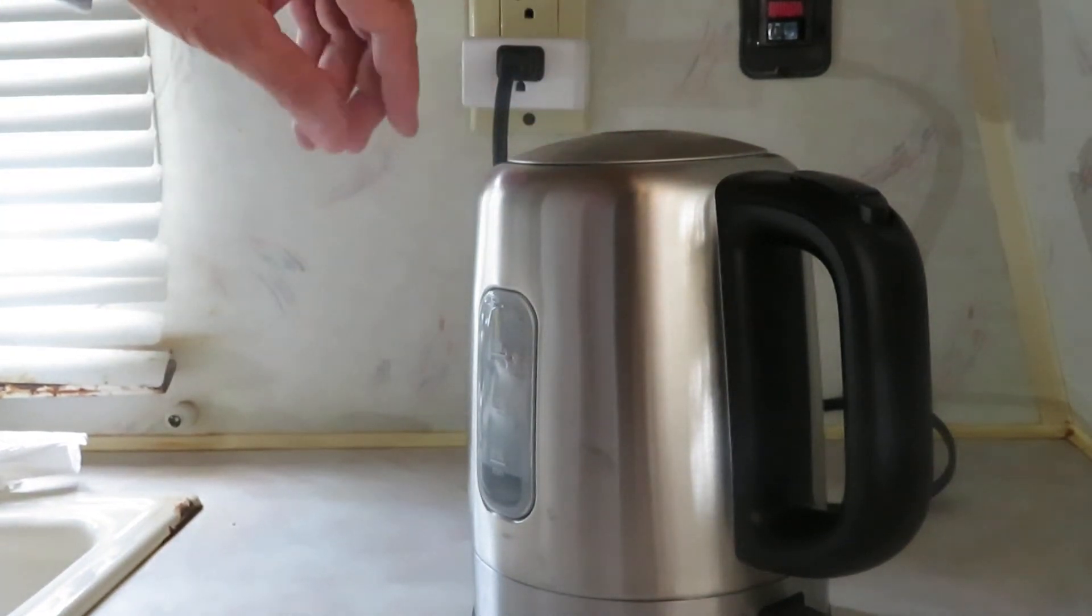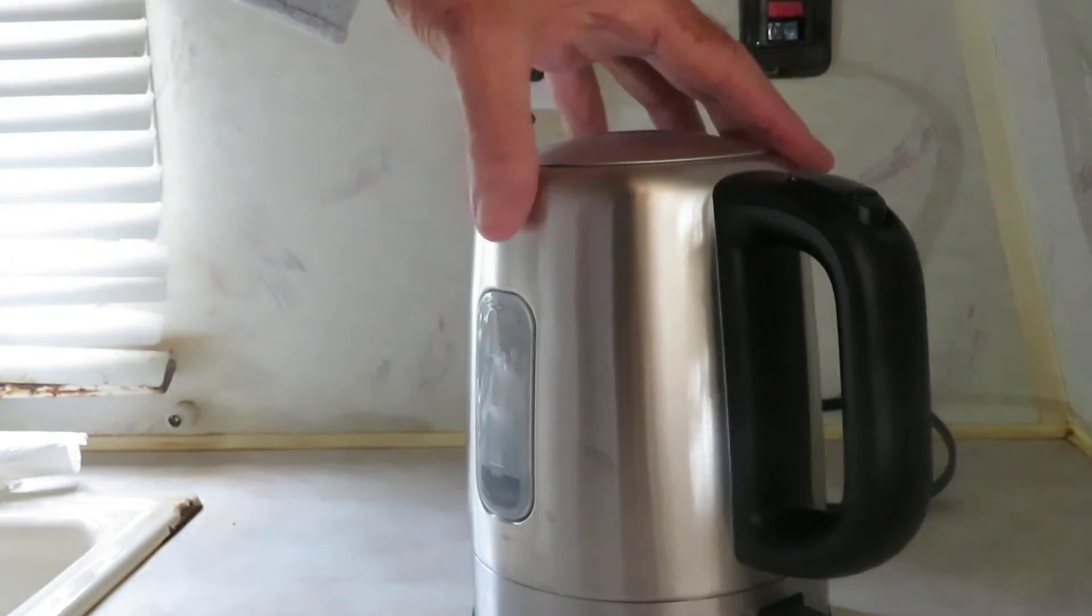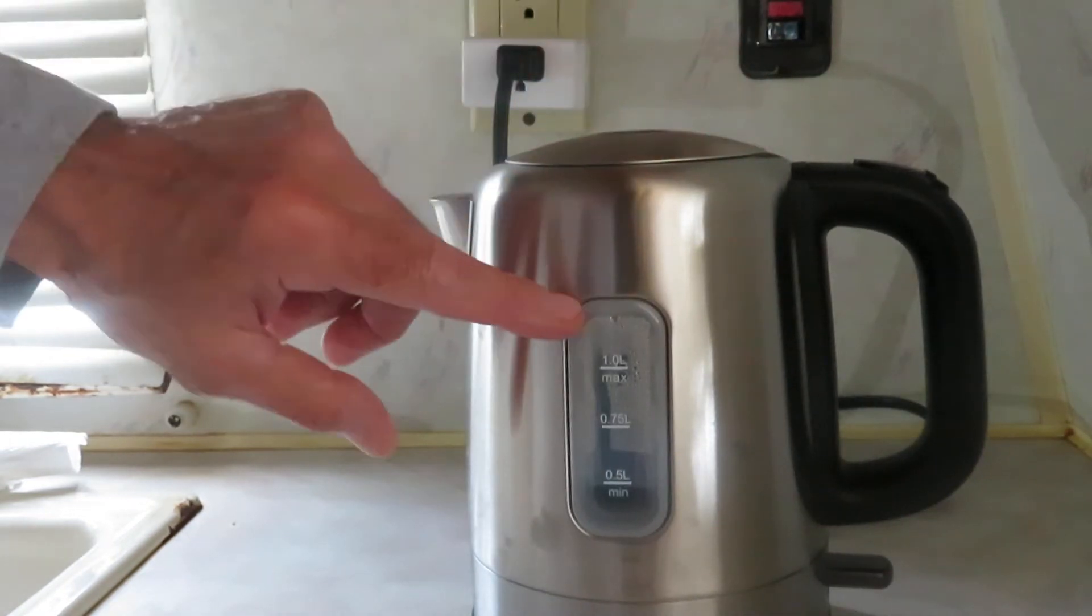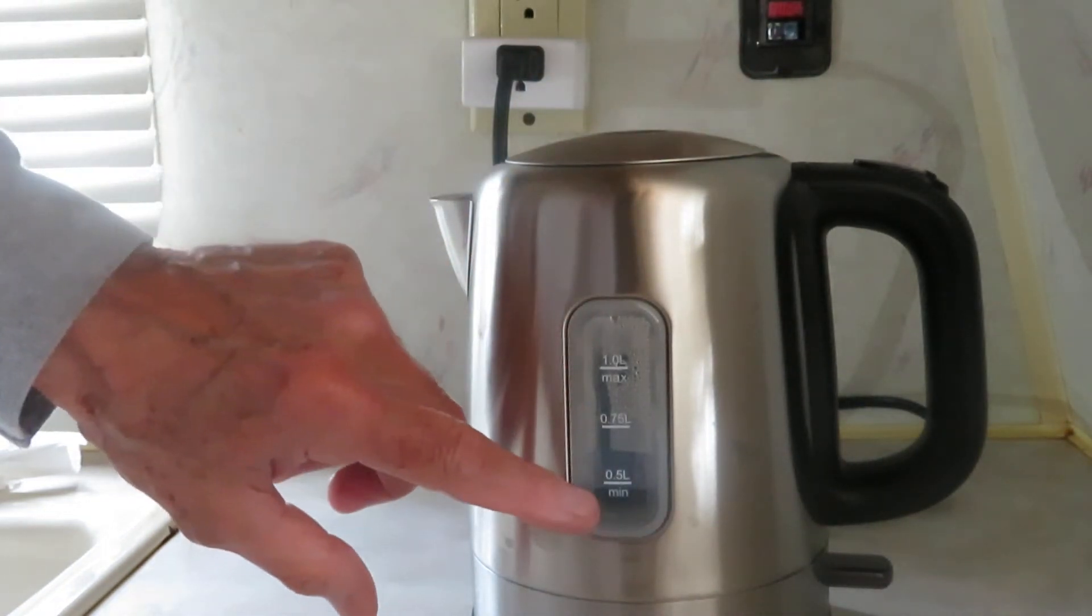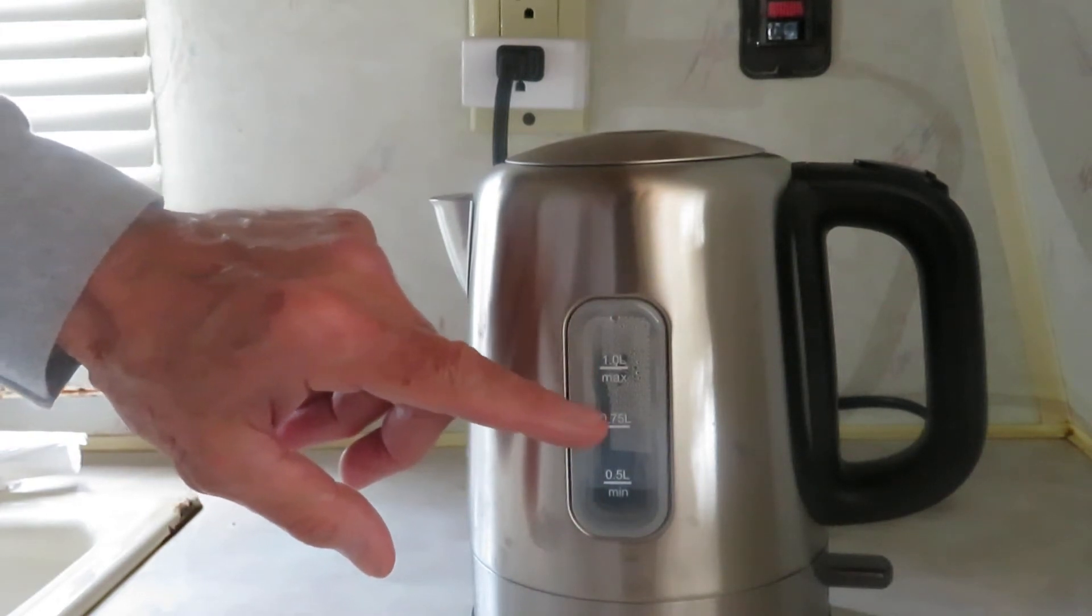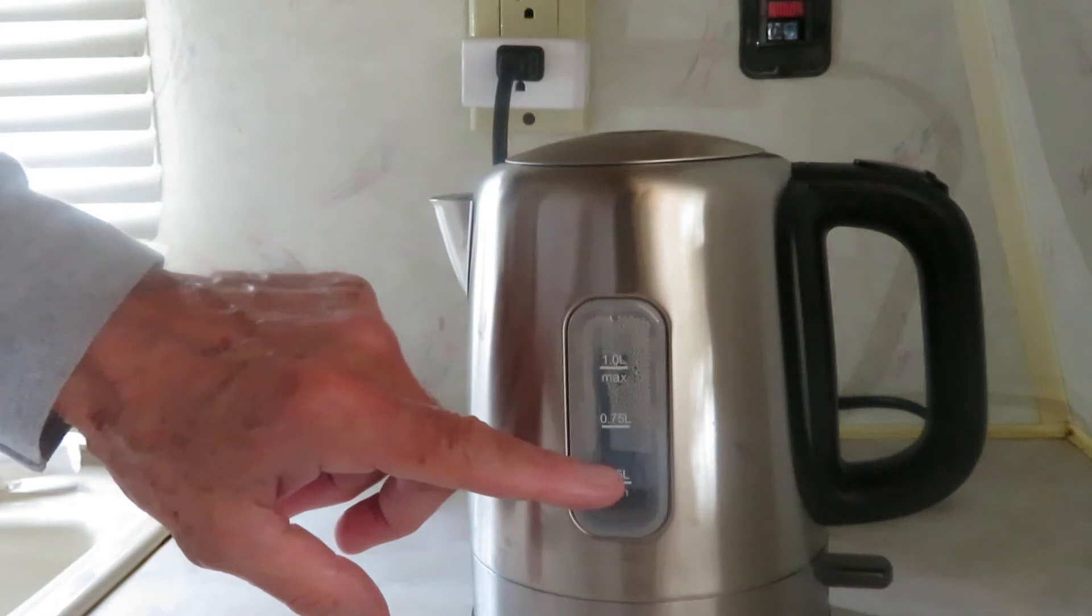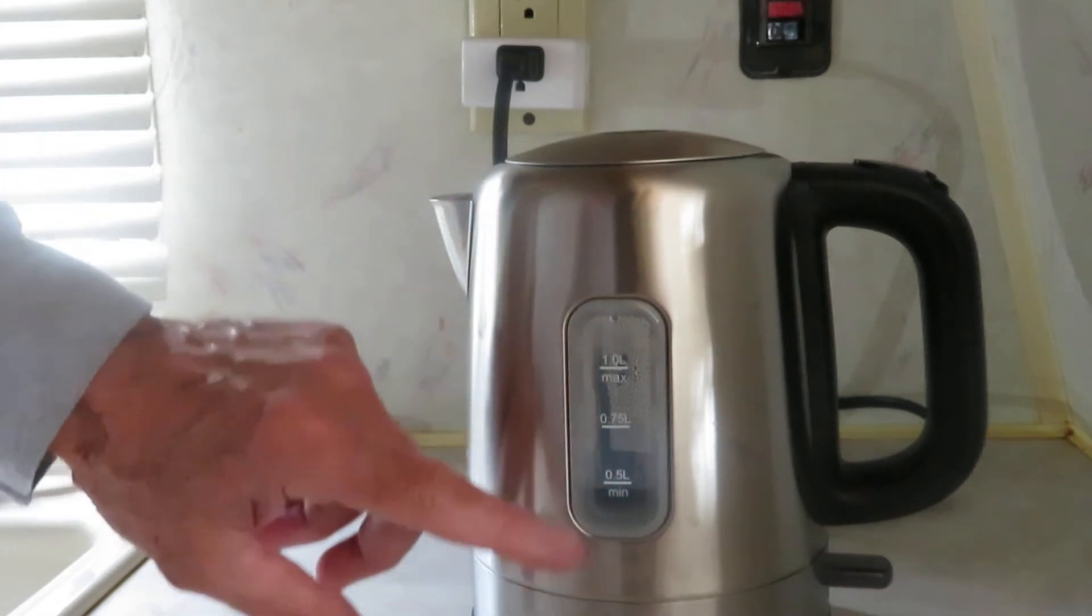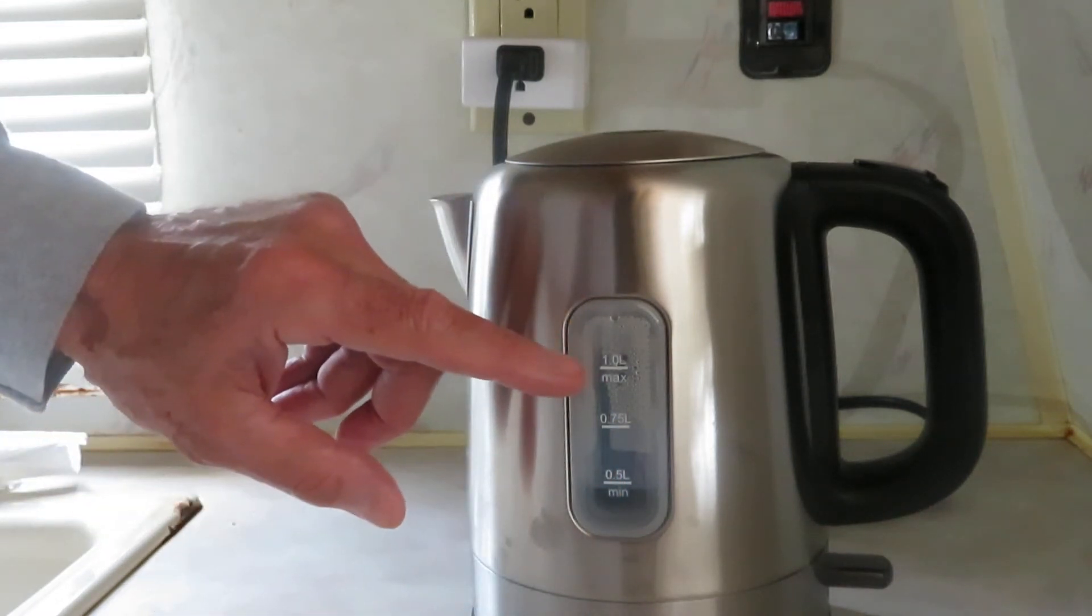Amazon electric stainless steel kettle. It has a level window on the front marked at one liter, three-fourths of a liter, and half a liter. The pot will hold a full one liter of water.